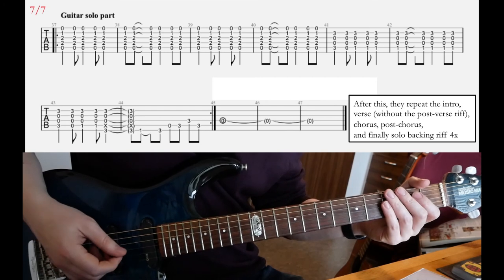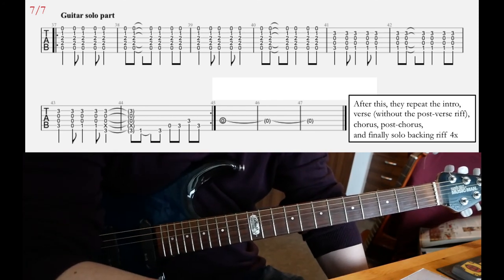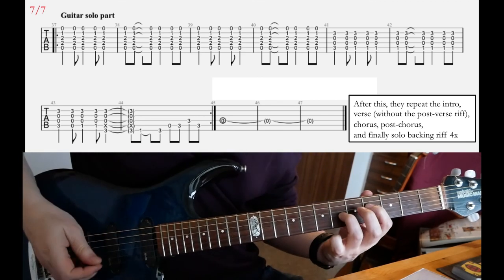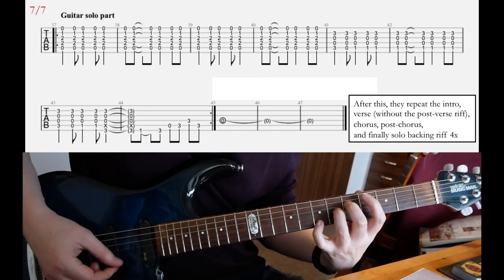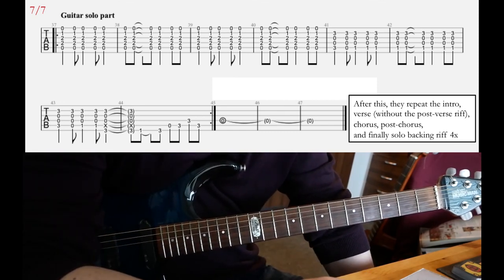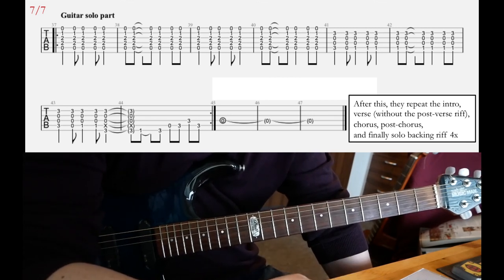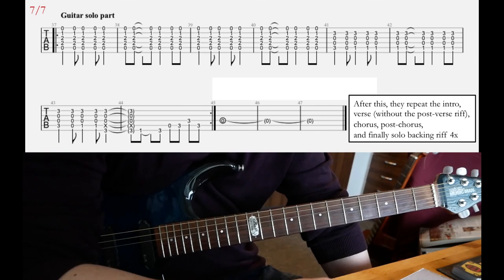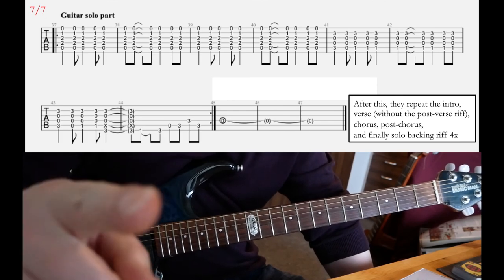So like that, I hope I didn't screw up anything. That'll be it. Those are all the riffs for the song and after that you just repeat the intro and verse again. You are not going to play the post verse riff, that one here. They skip that part in the repeat. You just go from verse directed to chorus and then post chorus and finally the solo backing riff. I mean that one that you see here, you're gonna play it four times at the very end of the song. And that will be Death Whispered A Lullaby by Opeth, have fun with that you guys.